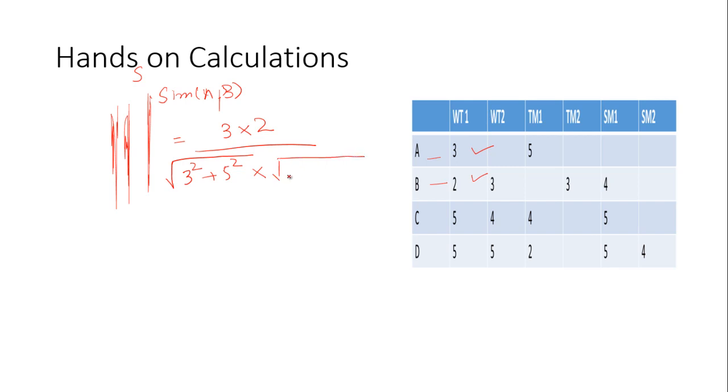3 multiplied by 2 is 6 divided by 3 squared plus 5 squared, it will give 5.839831 multiply by 6.164. If we divide it, it will give us 0.167.